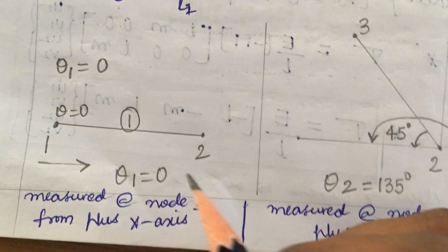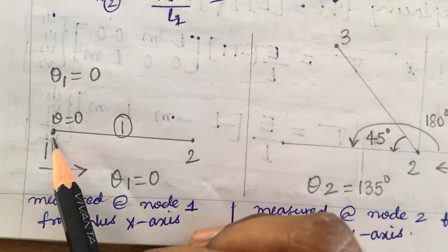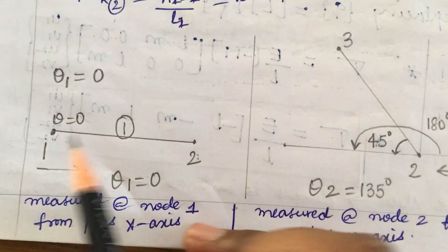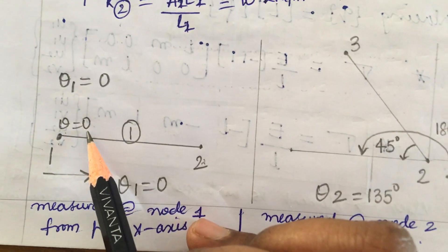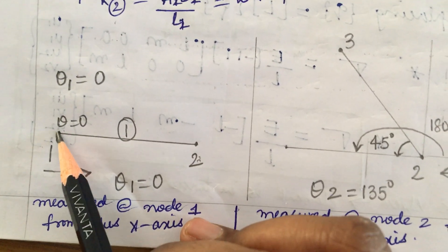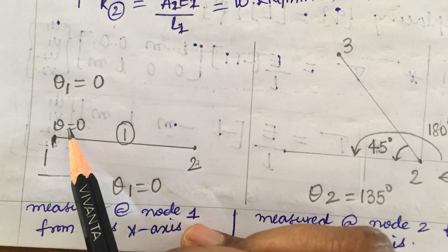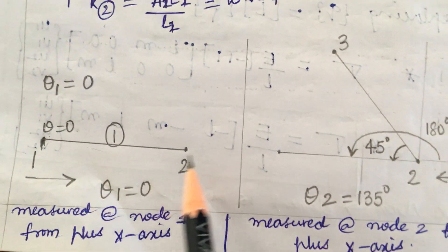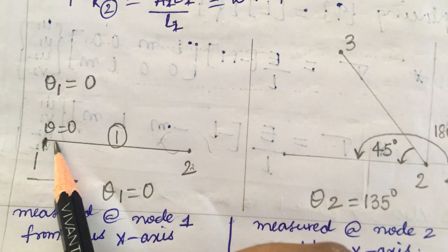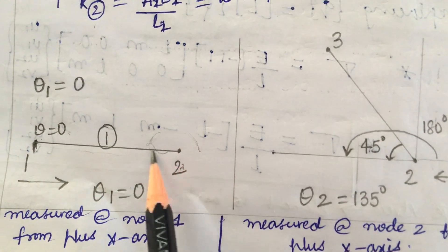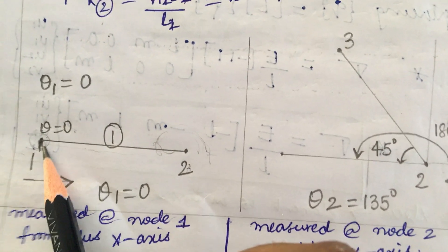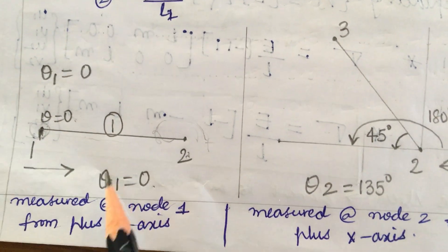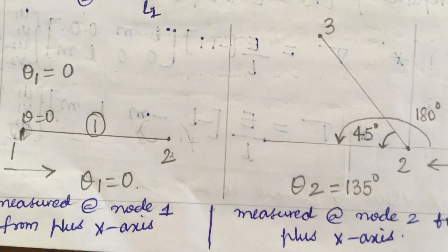For element 1, with nodes 1 and 2, there is no angle at node 1 from the global x-axis. So theta for element 1 equals 0 degrees, measured from the positive x-axis. Therefore theta1 = 0.